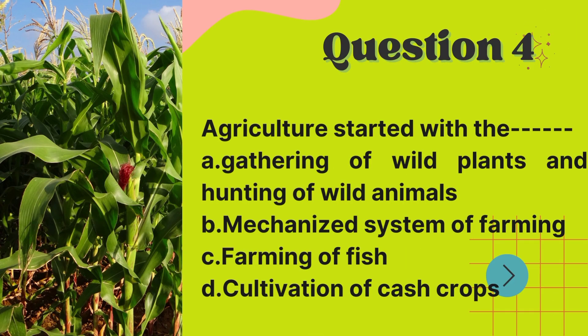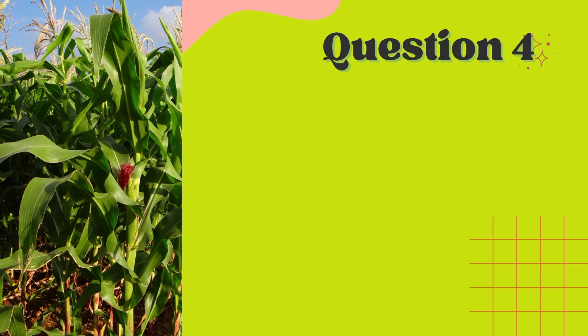The fourth question is an agricultural question: agriculture started with the dash. When agriculture started, it started with hunting of wild animals and gathering of wild plants, which is option A.